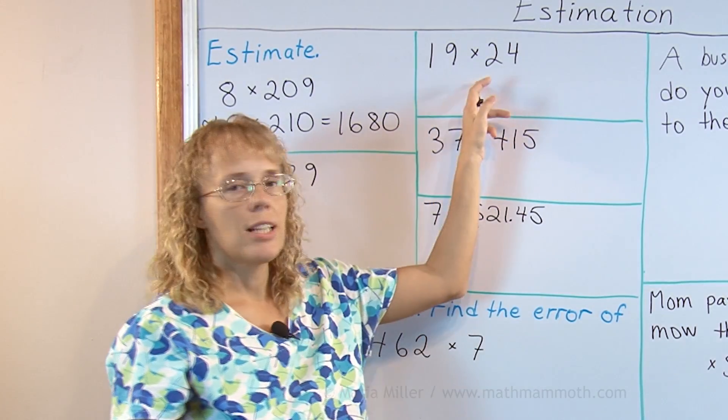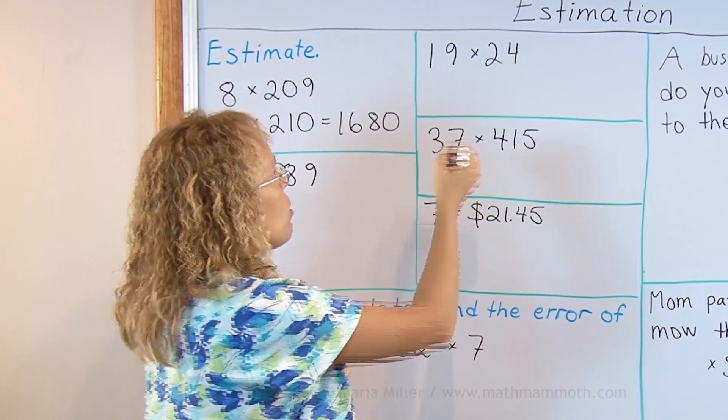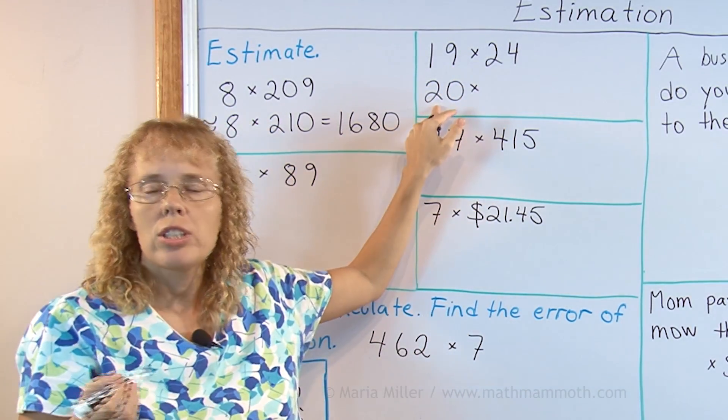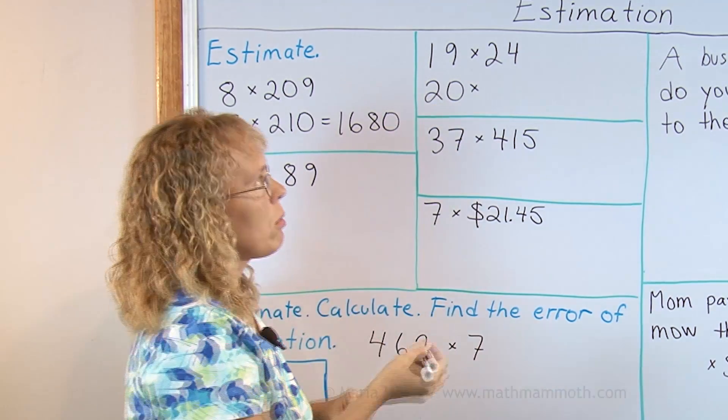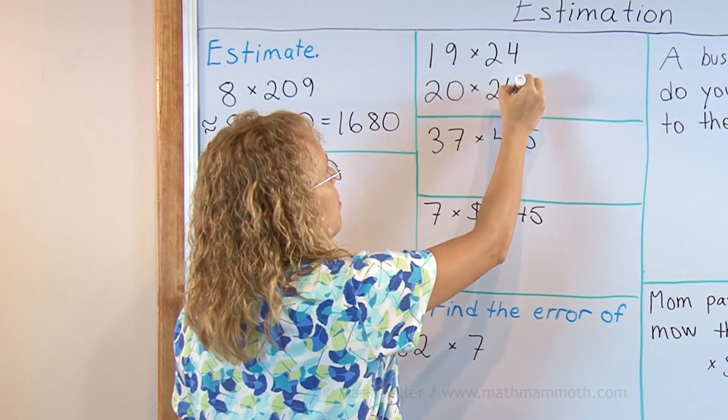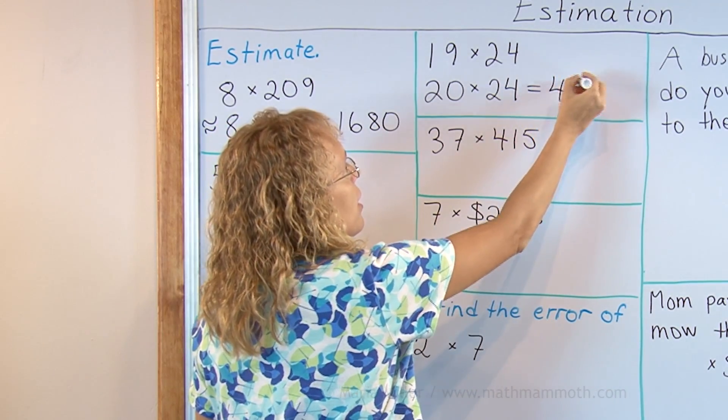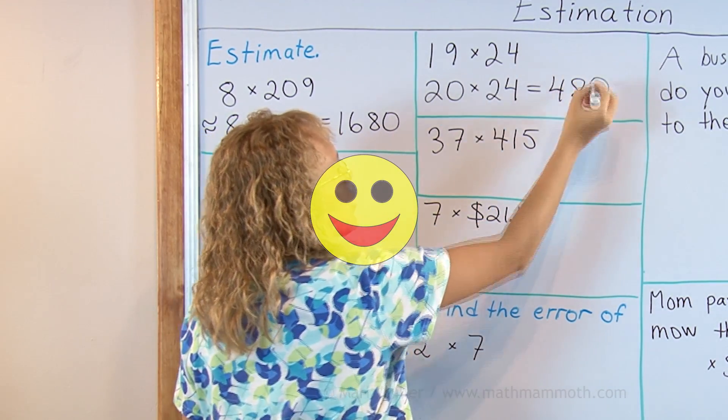Here 19 times 24 I will round 19 to 20 and since 2 is such an easy number to multiply by I will not round 24 at all. This is basically 2 times 24 is 48 and then we tag a 0 from here, 480.